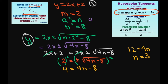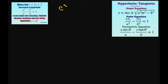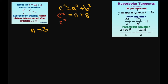My a is going to equal square root of n, and my b is going to equal square root of 8. We're going to use the formula c squared equals a squared plus b squared. So c squared equals a squared, which is n, plus b squared, which is 8. But we also know that n equals 3, so c squared equals 3 plus 8, which equals 11.